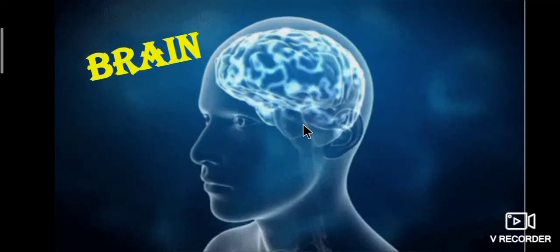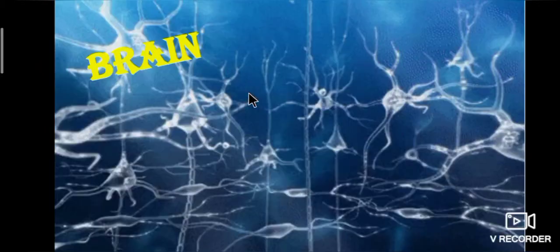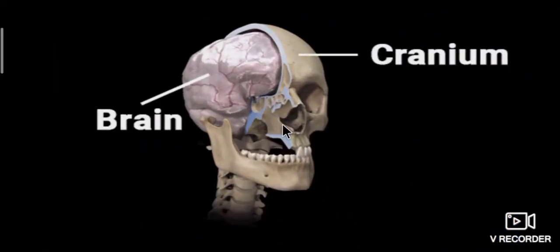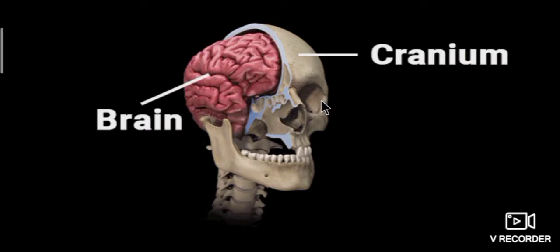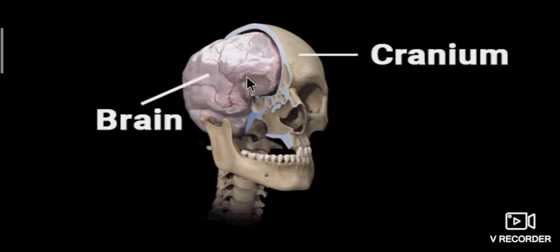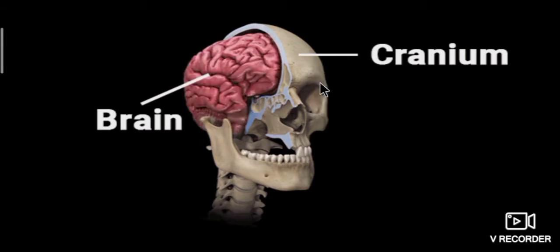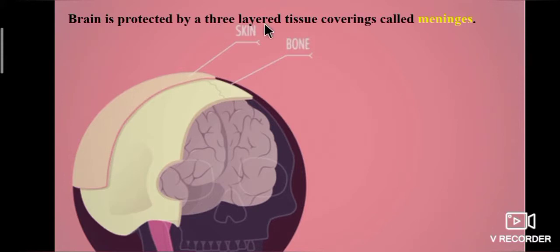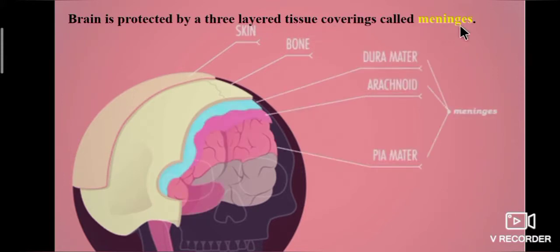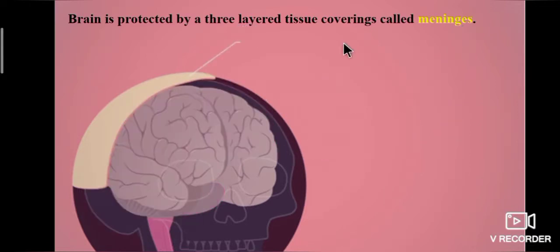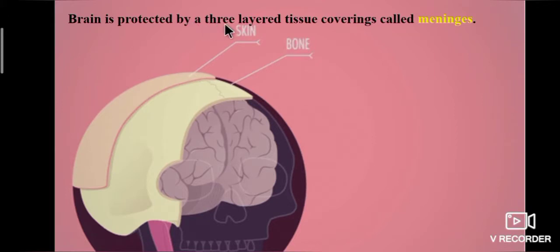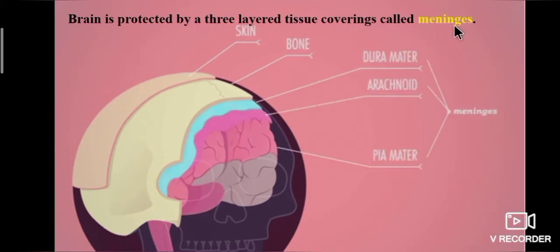Let's see the parts of the nervous system one by one. First, the brain. Brain is a complex organ placed inside the cranium. Brain is protected by three-layer tissue coverings called meninges: dura mater, arachnoid and pia mater.